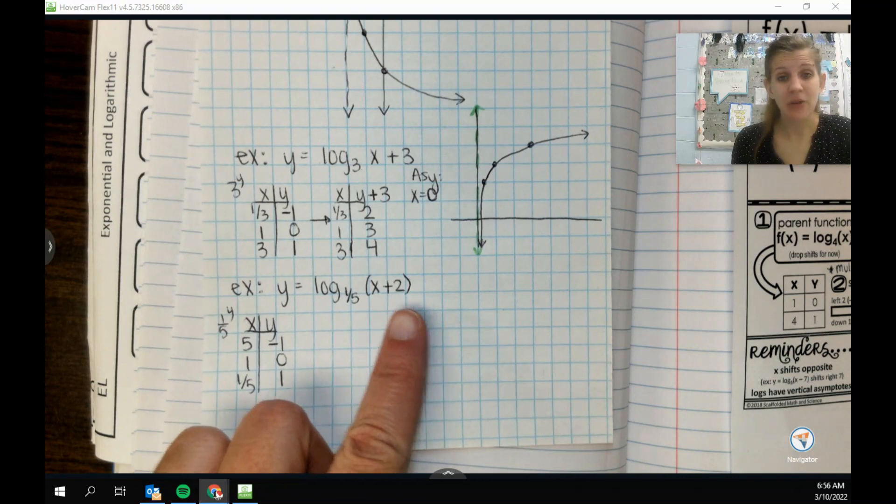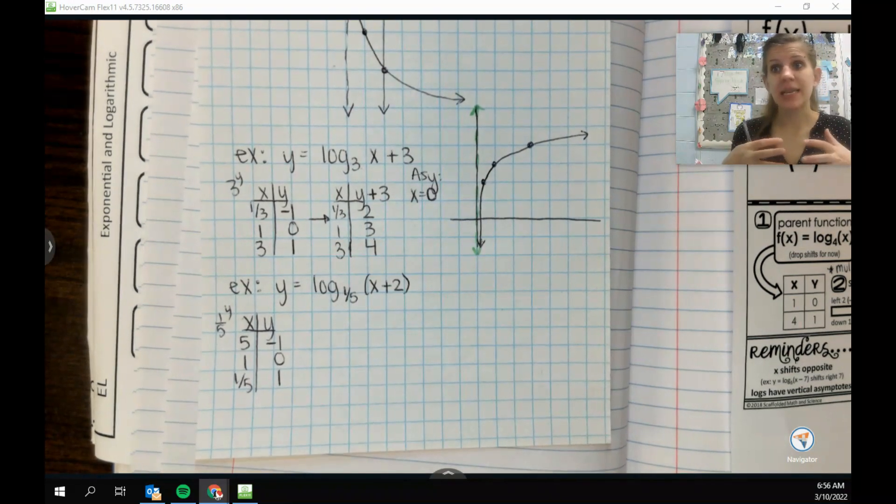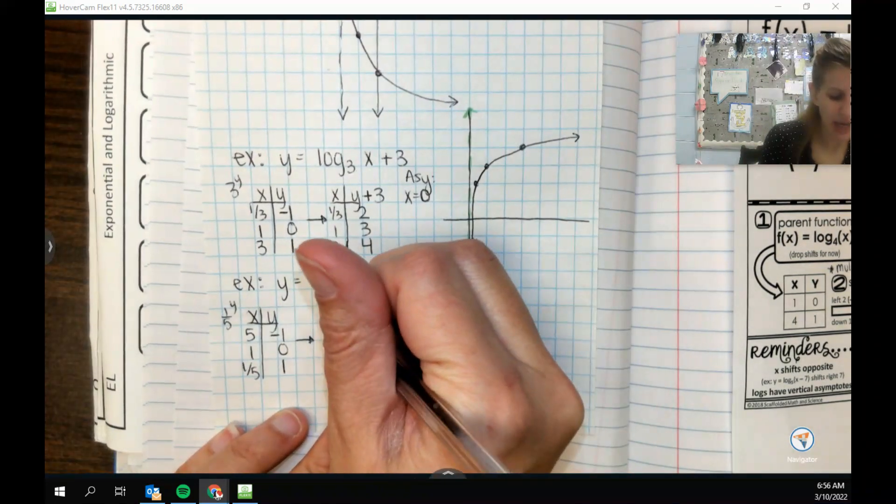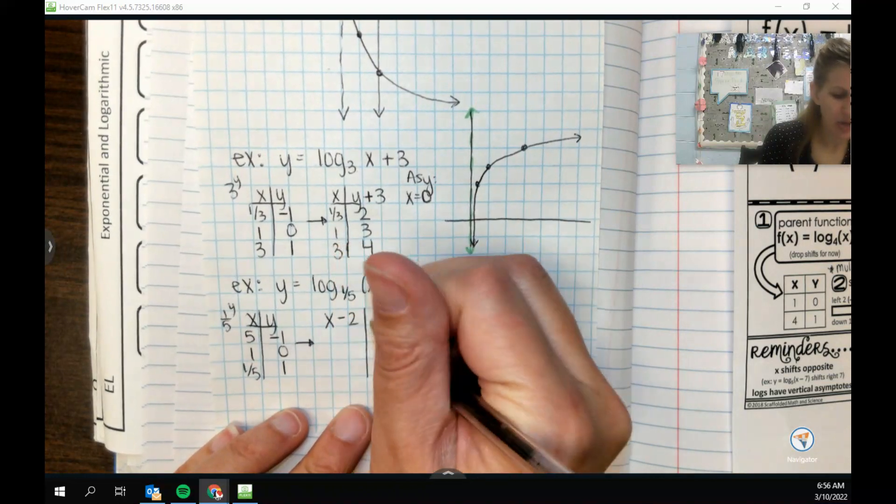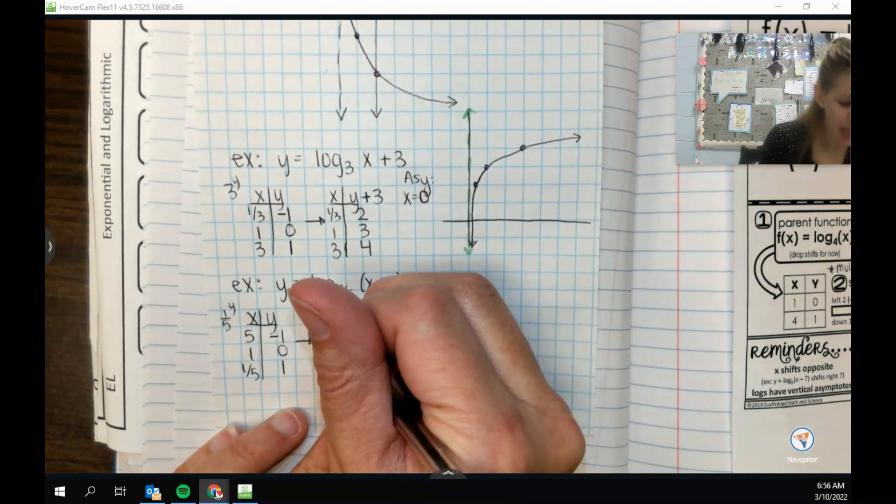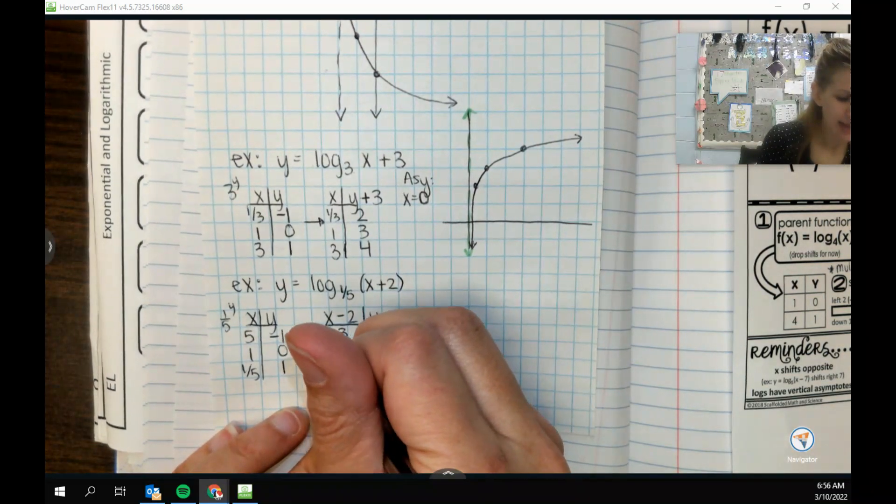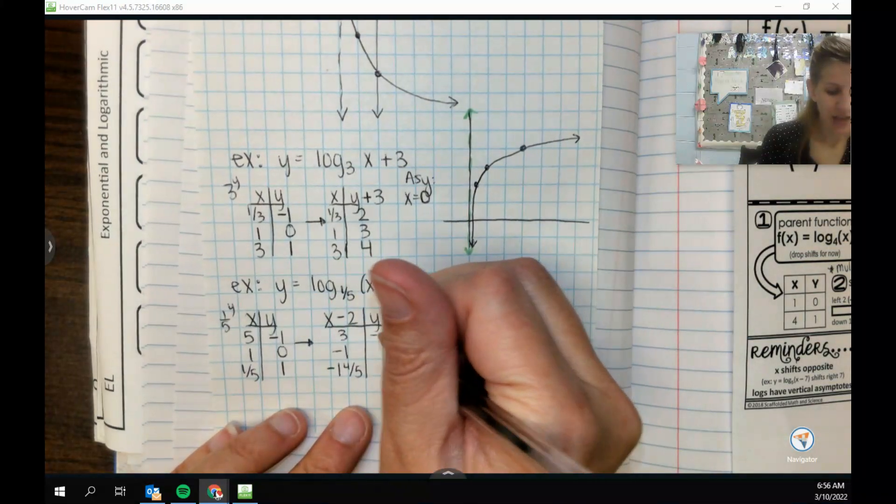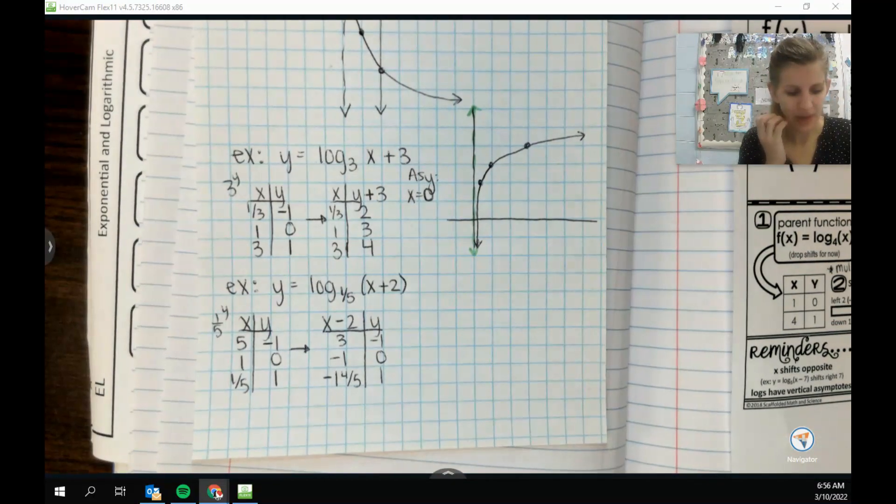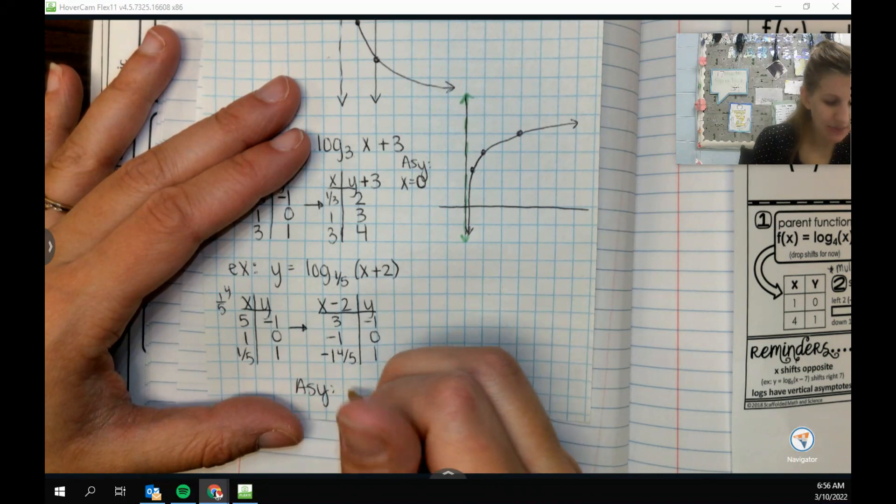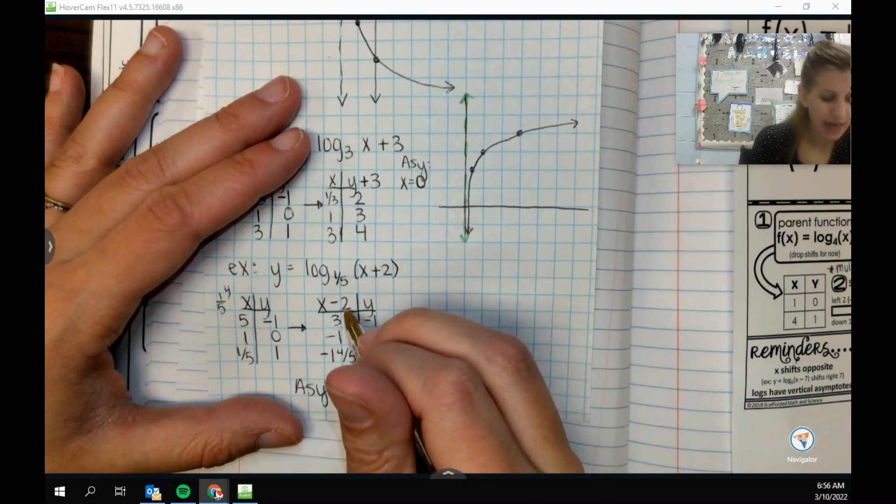And then this time, again, I only have one value over here, but this time, it's in parentheses. So it's happening with x. So that means when I do my new table, I need to do the opposite, so minus 2. And y is just going to stay the same. Okay, so we'll subtract 2 from each of our x's. So 3, negative 1, and then negative 1 and 4 fifths. And these all stay the same. Okay. In addition to that, my asymptote can be helpful. My asymptote is at negative 2.